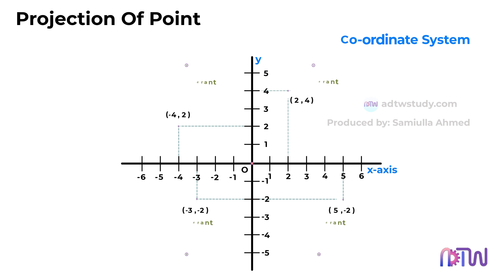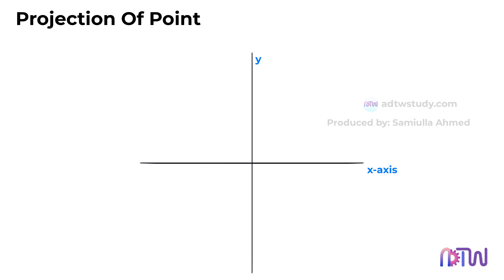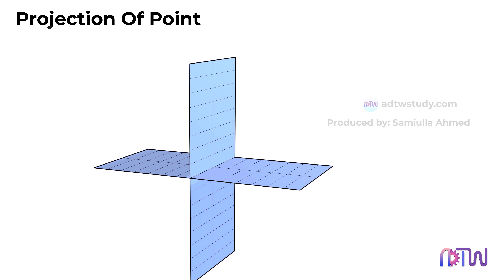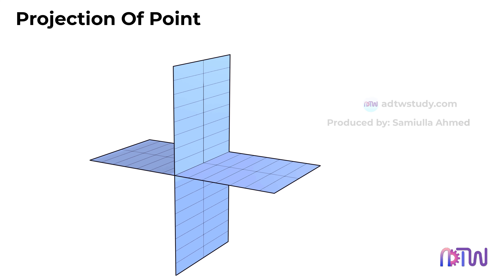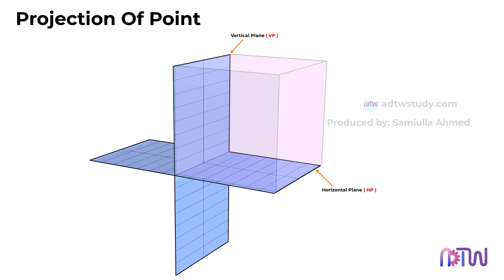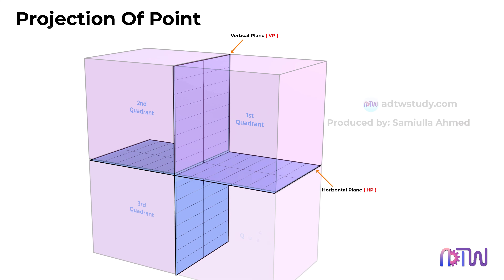Now, let's extend this concept to a three-dimensional perspective. The once linear x and y-axis transform into planes — specifically, the vertical plane, abbreviated as VP, and the horizontal plane, abbreviated as HP. The entire space between these two planes collectively constitutes the first quadrant, with subsequent spaces forming the second, third, and fourth quadrants.